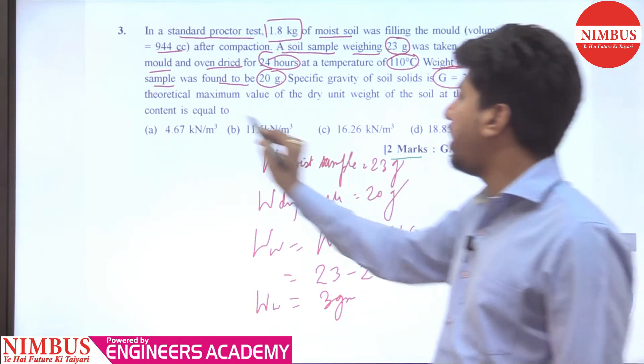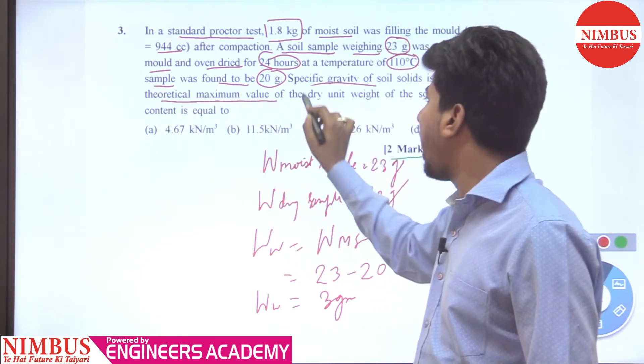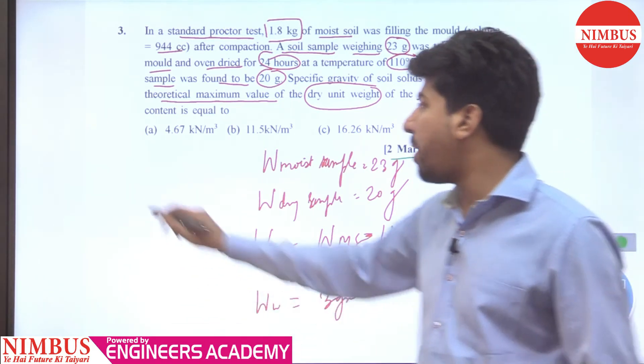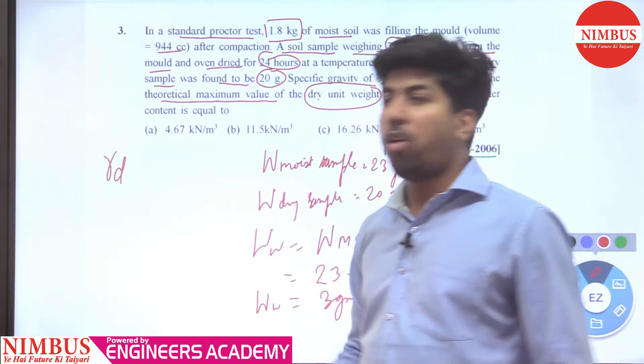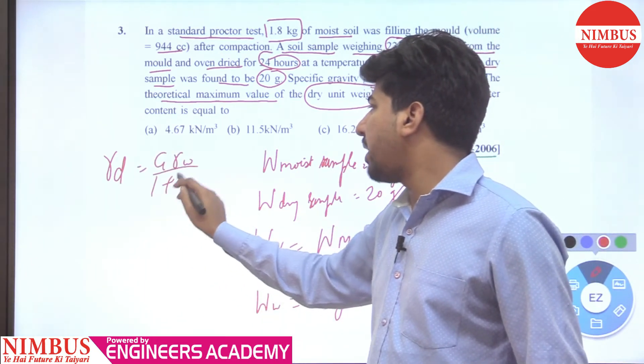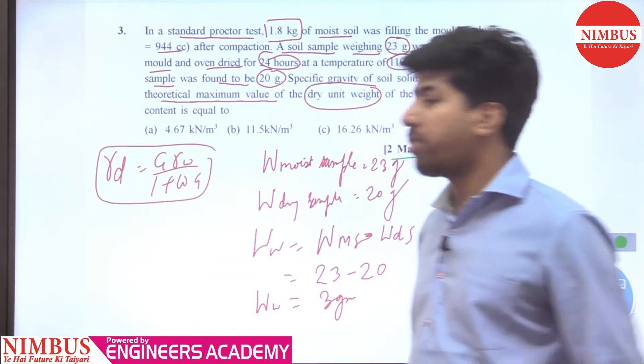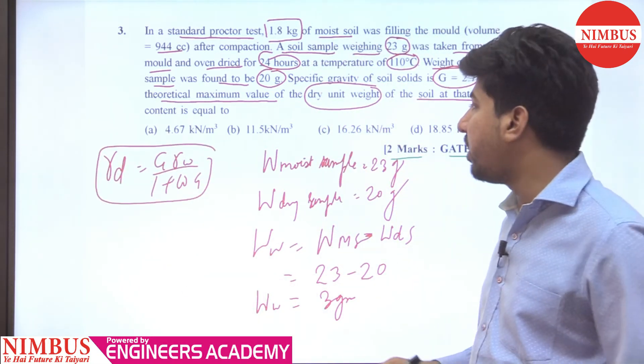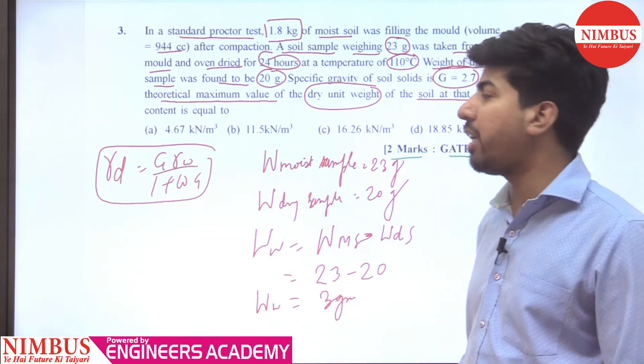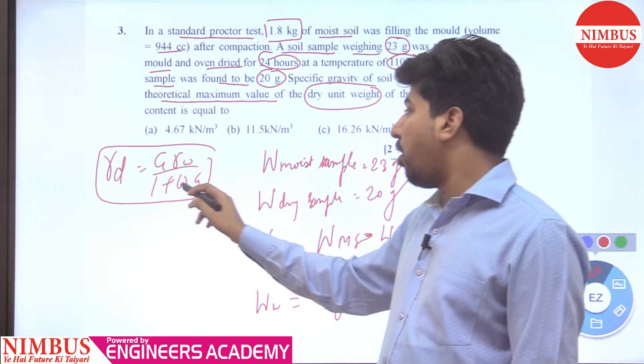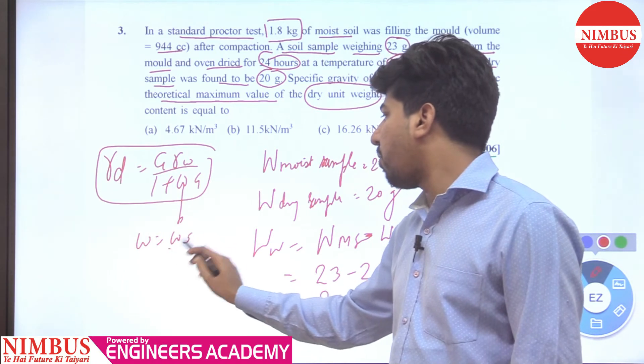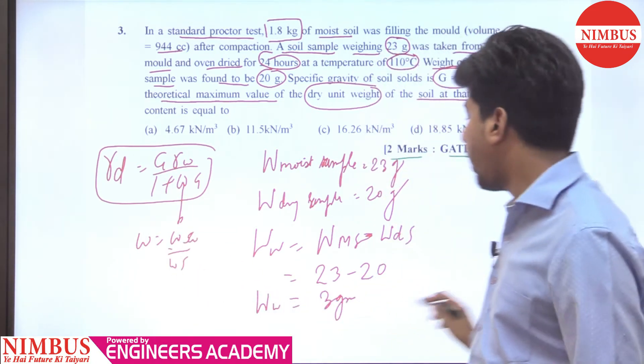Here it is equal to 3 grams. So 3 grams, what is the weight of the water is equal to. And the theoretical maximum value of dry unit weight of the soil at that water content is equal to gamma d max.